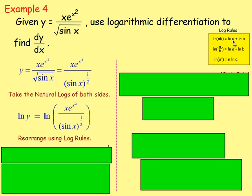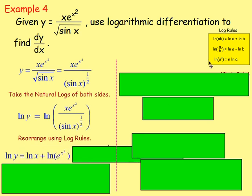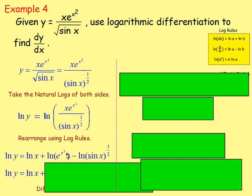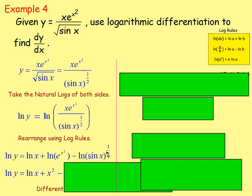Using log rules to split: ln(y) = ln(x) + ln(e^(x²)) − ln((sin x)^(1/2)). Bring the indices down: ln(e^(x²)) becomes x²·ln(e), and ln(e) = 1, so that simplifies to x². The half comes down from ln((sin x)^(1/2)) giving −(1/2)·ln(sin x). So: ln(y) = ln(x) + x² − (1/2)·ln(sin x).